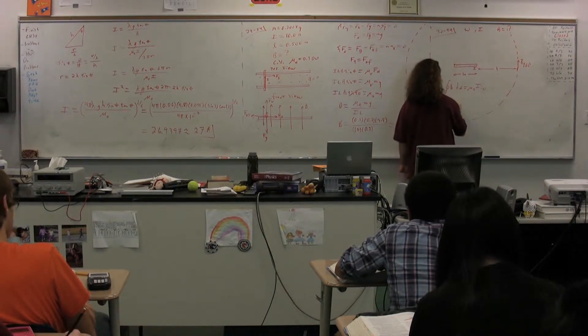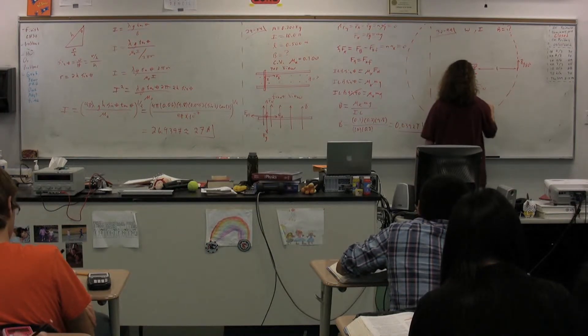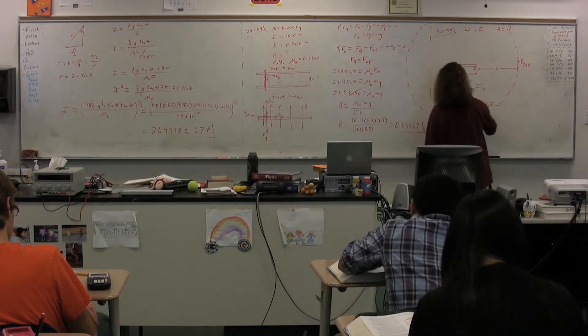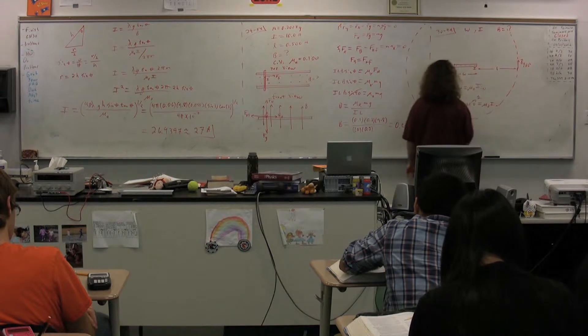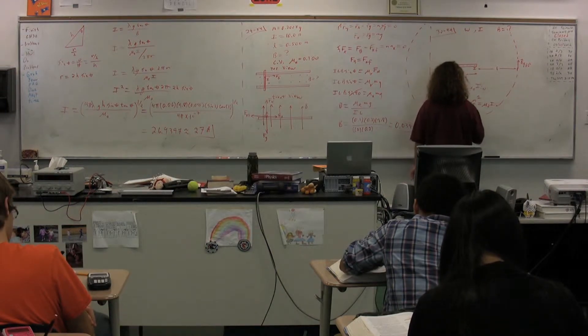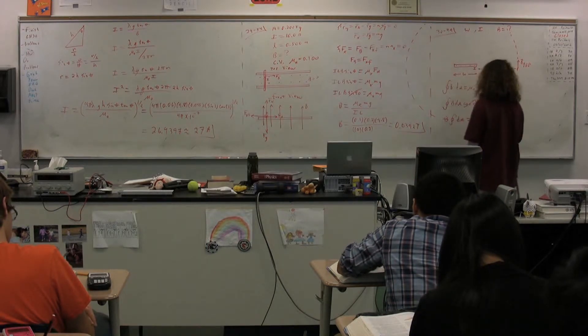Therefore, on the left-hand side, we get B ds times the cosine of zero, mu naught current on the inside. The cosine of zero is just one, so that goes away. We have B as constant. So, B times a closed surface integral ds equals current mu naught I times current on the inside here.